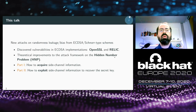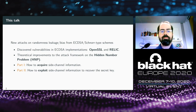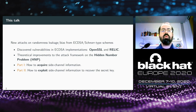In this talk, I will describe new attacks exploiting randomness leakage and bias from ECDSA-type signature schemes, based on newly discovered vulnerabilities in ECDSA implementations contained in the OpenSSL and Relic cryptographic libraries. These vulnerabilities have led to theoretical improvements to the attack framework based on solving the hidden number problem. In the first part of the talk, I will explain how to acquire side-channel information. In the second part, Akira will explain how to exploit that information to recover the secret key.